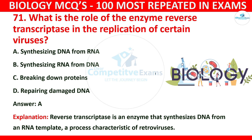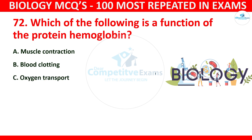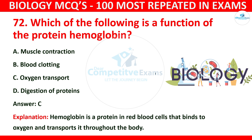Question number 72: Which of the following is the function of the protein hemoglobin? The options are muscle contraction, blood clotting, oxygen transport, or digestion of proteins. The correct answer is C: oxygen transport. Hemoglobin is a protein in red blood cells that binds to oxygen and transports it throughout the body.